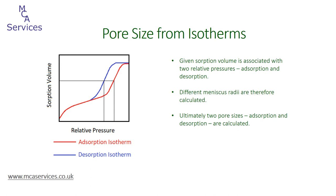As we've seen from the equation, the radius of the liquid adsorbate meniscus is directly related to the relative adsorption pressure. Furthermore, the smaller the pore, the lower the relative pressure required for it to become completely filled. With the appearance of hysteresis between adsorption and desorption isotherms, we're presented with a problem: at a given adsorption volume we have two relative pressures — one corresponding to the adsorption isotherm and a lower one corresponding to the desorption isotherm. The result is two values of RM, and thus two different pore sizes.